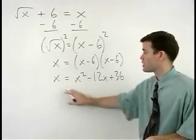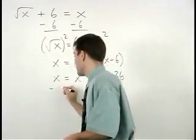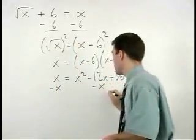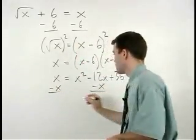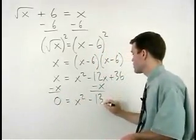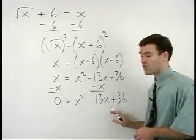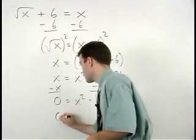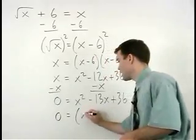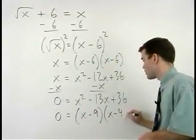So our next step is to move the x to the right side by subtracting x from both sides of the equation to get 0 equals x squared minus 13x plus 36, which then factors 0 equals x minus 9 times x minus 4.